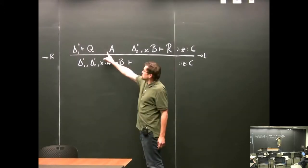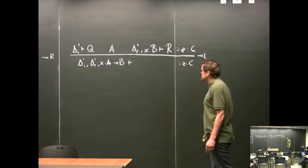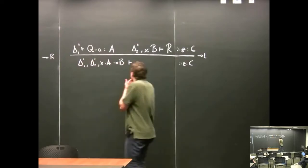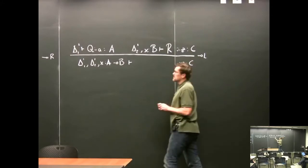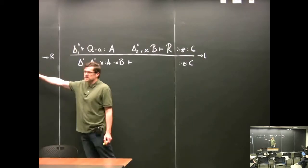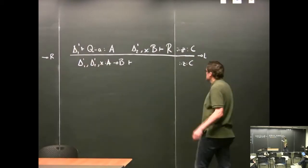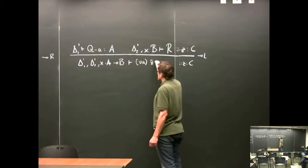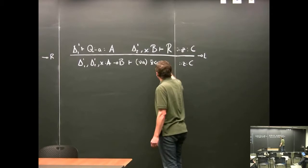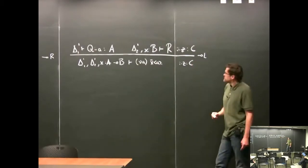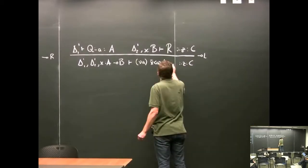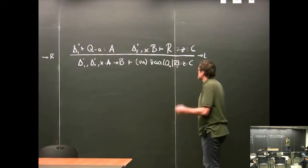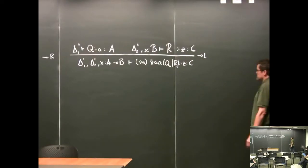So what do we put in the blank spaces? We have to put some new channel — let's call it small a. Then the process expression has to be an output, because the left rule has to match the right rule which is an input. We output along X the channel a. And then we have Q sub a in parallel with R, where Q sub a depends on a and R depends on X — the continuation depends on X.